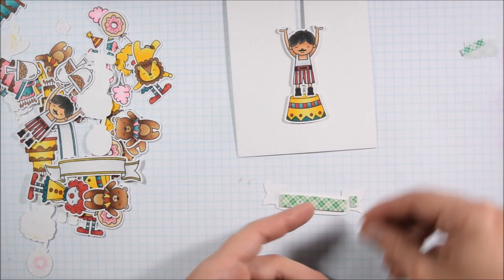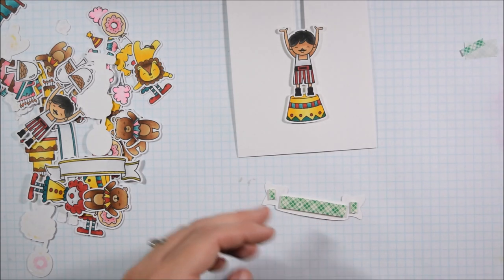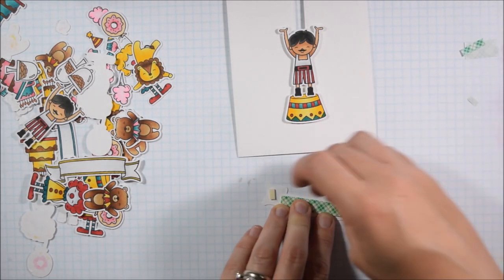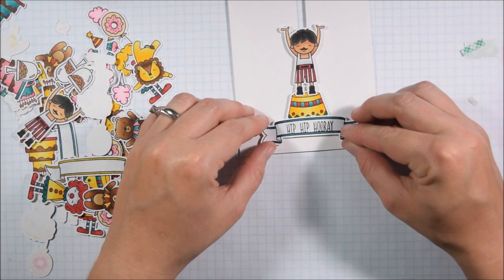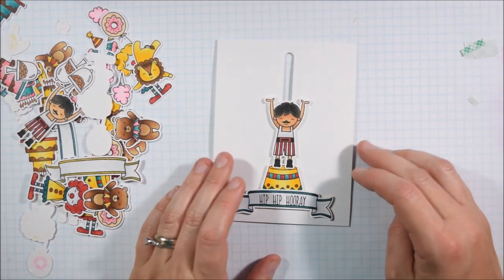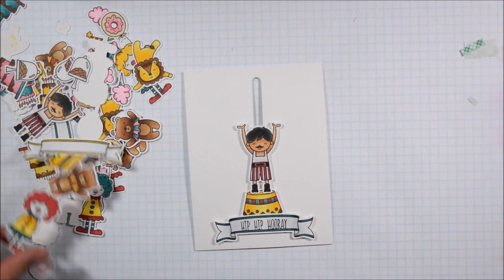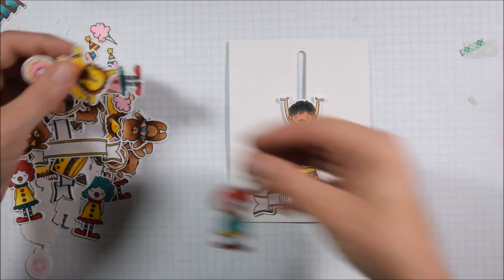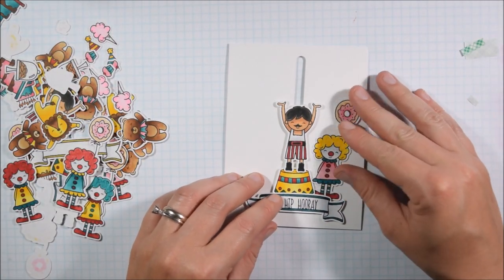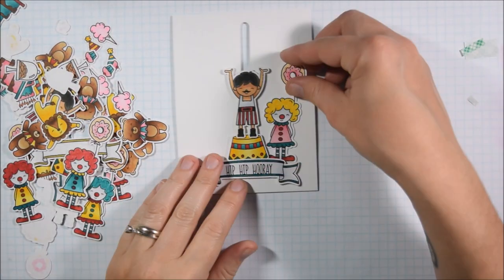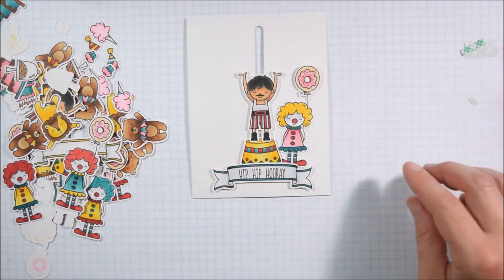In this instance, I happen to have the Scotch foam tape nearby, so that's what I used. And I found it easier to put my main focal image, because he's in the center, down first and then add the different images around it.